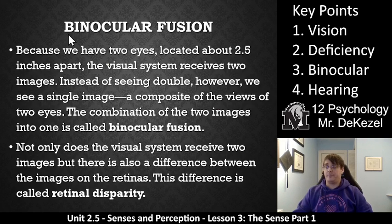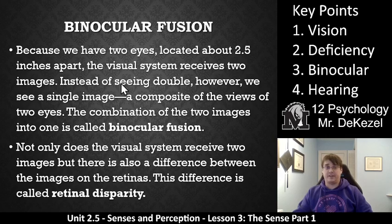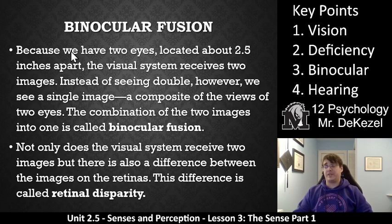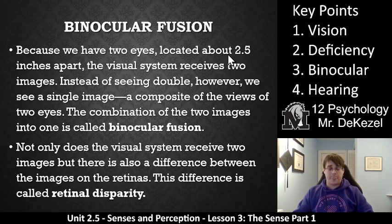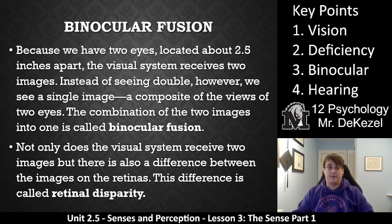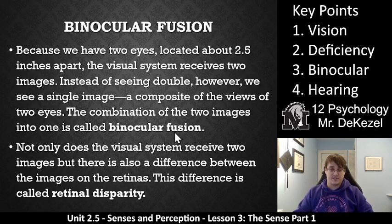So, binocular fusion. 'Bi' means two, 'ocular' is eye, and 'fusion' means bringing together — so we are talking about having two eyes brought together, information from two eyes fused into one so we can interpret it. Because we have two eyes located about two and a half inches apart, the visual system receives two images. And instead of seeing double of everything, your brain perceives only one — a composite view of the two eyes. The combination of the two images into one is called binocular fusion.